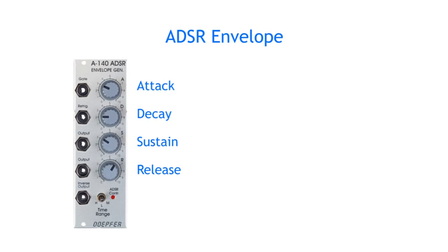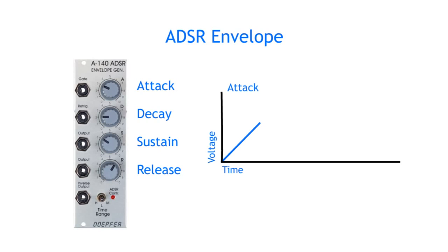Attack, Decay, Sustain, Release. When the ADSR is triggered by a gate signal it will first start its attack stage, which is a rising CV level from zero to a maximum. The time it takes for the rise is usually set by an attack knob.